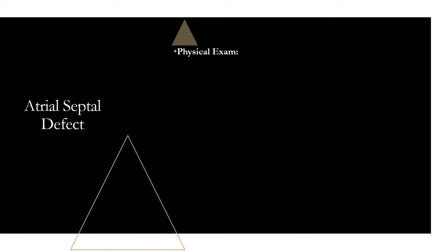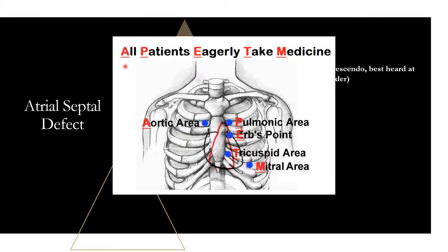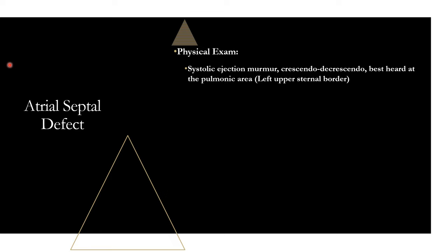Physical exam is the important part — this is what differentiates conditions. For atrial septal defect you're going to have a systolic ejection murmur that is crescendo-decrescendo, best heard at the pulmonic area, which is the left upper sternal border. To remember the auscultation points, use the sentence: 'All patients eagerly take medicine' — representing aortic, pulmonic, Erb's, tricuspid, and mitral points going down the chest.